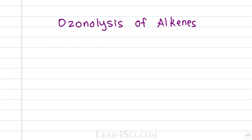Ozonolysis, as the name implies, comes from ozone — the molecule O3 — and lysis, meaning to break. In the ozonolysis of alkenes, you react not only the carbon-to-carbon pi bond, but you also break the carbon-to-carbon sigma bond, completely separating the two carbons from each other.